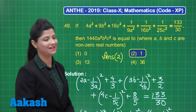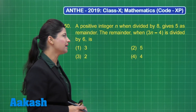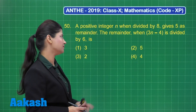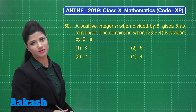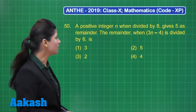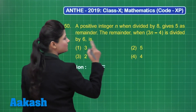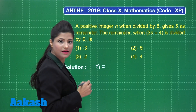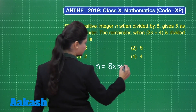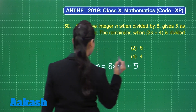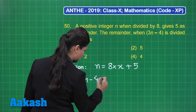Let's proceed to the next question. A positive integer n, when divided by 8, gives 5 as remainder. The remainder when 3n − 4 is divided by 6 is which of these four options? Here n divided by 8 gives remainder 5, so with quotient x we have n = 8x + 5.